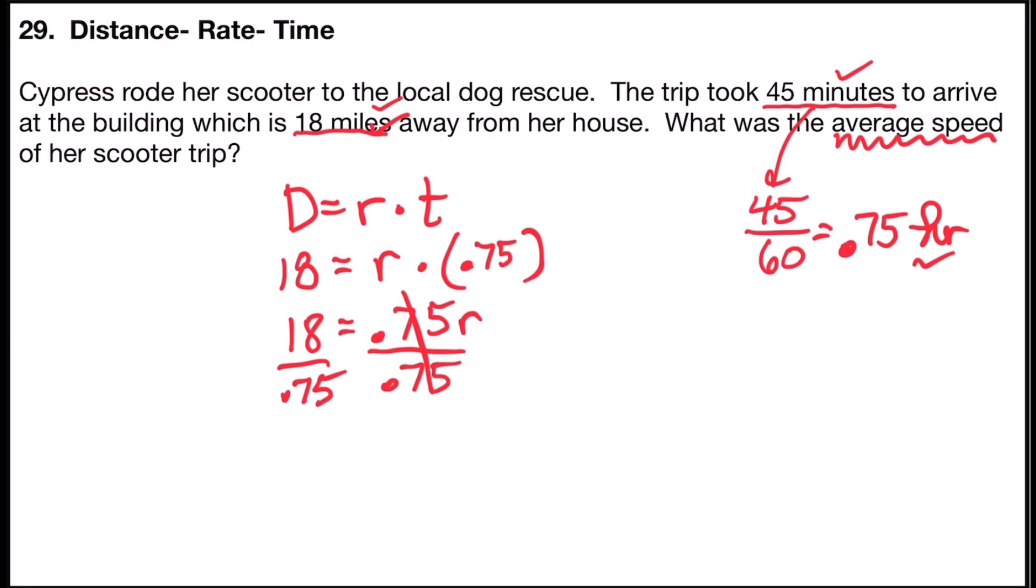or as some people say, it cancels out, leaving me with R. And 18 divided by 0.75 is 24. So that means the rate was 24 miles per hour on Cypress's drive to the dog rescue.